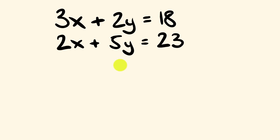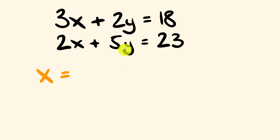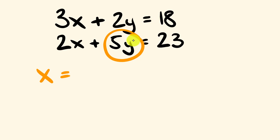So how do we do this? We're going to start by solving for x. The first thing we're going to do for this particular trick is we are going to choose the coefficients for one of our y values. We have 2y and we have 5y — I'm going to choose 5y. We're going to do a bit of cross multiplication. So first off, we have 5, and we're going to multiply that crossways by the answer on the other equation. So 5 multiplied by 18 is equal to 90.